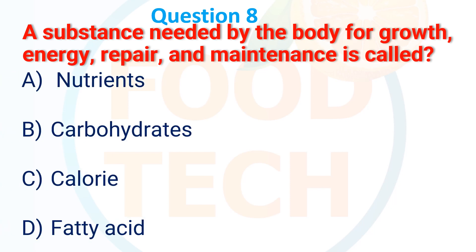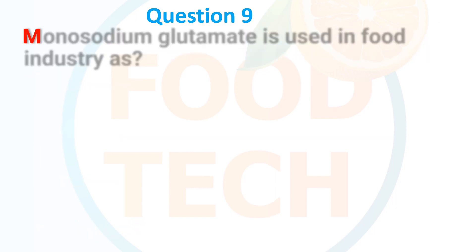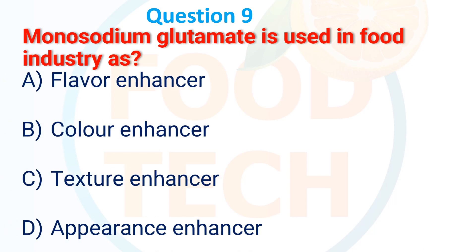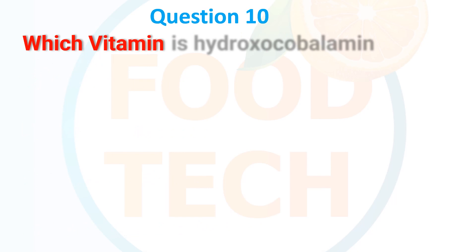Question 8: The substance needed by the body for growth, energy, repair, and maintenance is called — A. Nutrients, B. Carbohydrate, C. Calories, D. Fat. The answer is A. Nutrients.